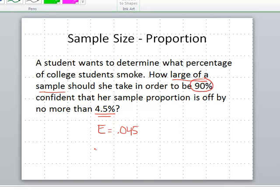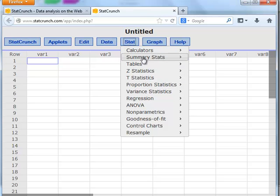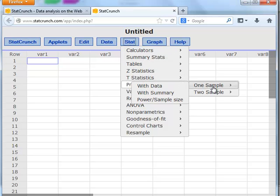Now, in StatCrunch, we need to know the width of the interval, and that's two times the margin of error, which is 0.09. So, in StatCrunch, we can work this one through by clicking on Stat, Proportion, One Sample.